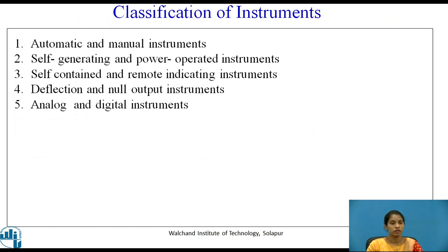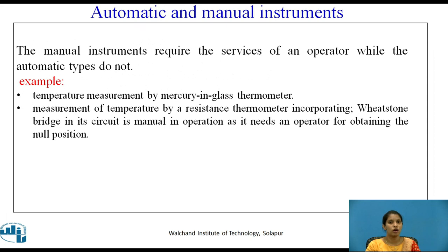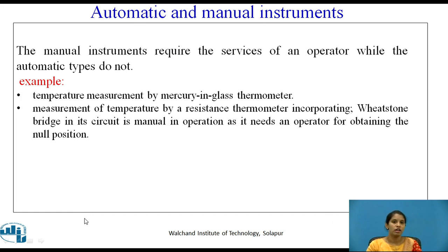Classification of instruments includes: automatic and manual instruments, self-generating and power operated instruments, self-contained and remote indicating instruments, deflection and null output instruments, and analog instruments. Manual instruments require the services of an operator while automatic systems do not. In manual instruments, human intervention is needed for measurement. For example, temperature measurement by mercury-in-glass thermometer requires manual operation, whereas a resistance thermometer with a meter bridge needs an operator for obtaining the null position.